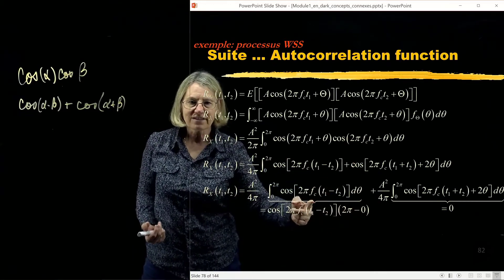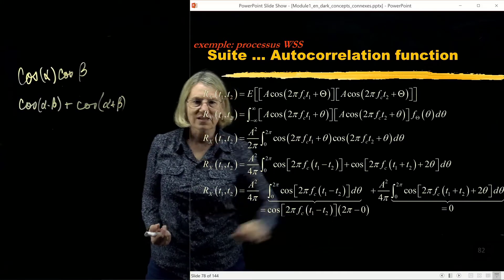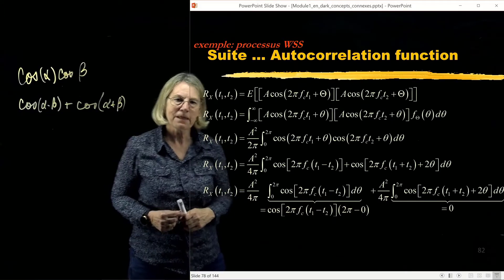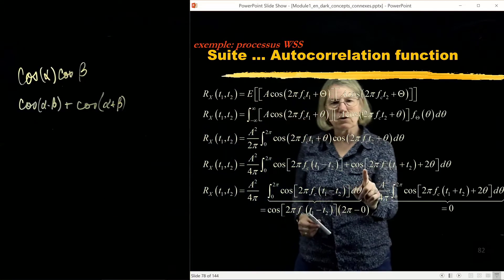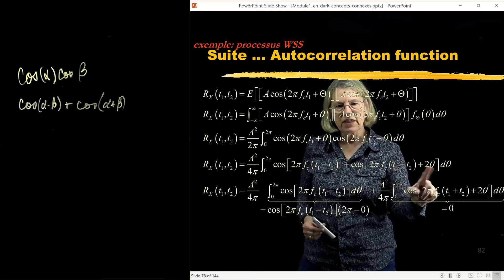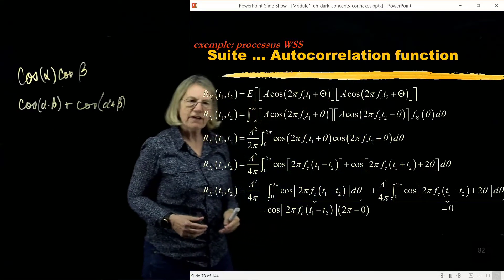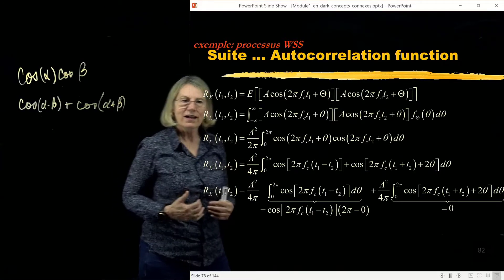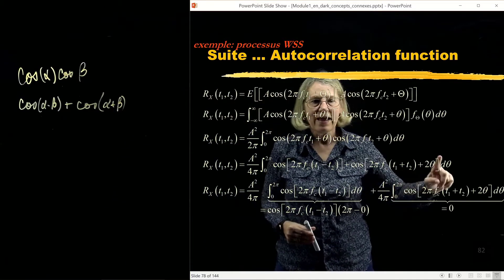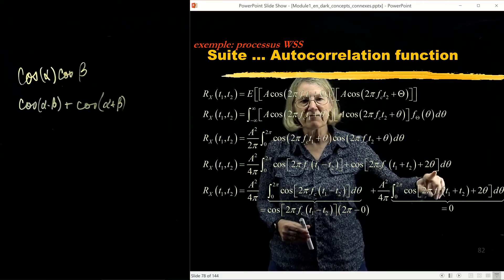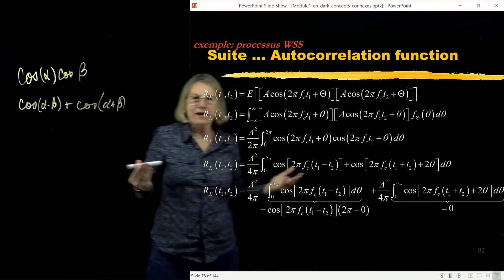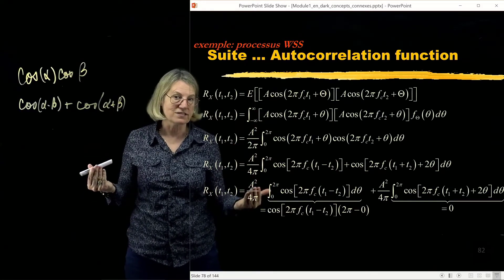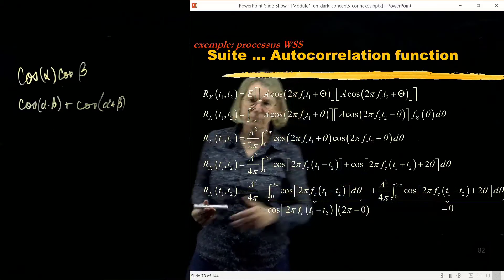So this part of the integral is just the cosine of 2π fc times the difference t1 minus t2 times 2π. Now let's look at that second integral. Here I have the cosine of 2θ plus something. Now if I look at the integral of that cosine, well it'll be a sine, and I'm going to evaluate that sine between 0 and 2π. And when I put in 0 for theta, and if I put in 2π, it'll be plus 4π, and I subtract them, well they're going to be the exact same thing due to the periodicity of the sinusoidal function. Therefore that's going to give me 0.